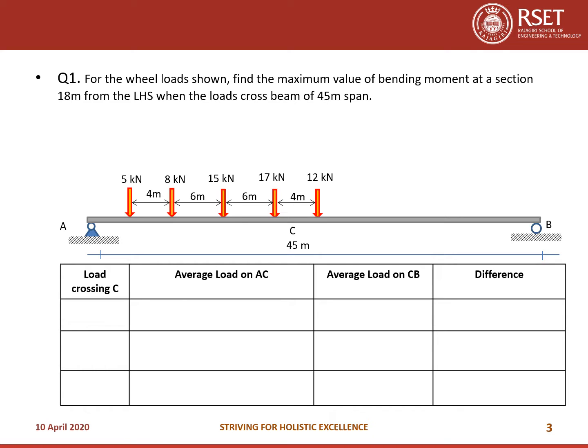Let us draw this table and see where the maximum bending moment will occur. First, consider the load 12 kN crossing C — that is, to the right side of C is only 12 kN, and the rest of the loads are to the left of C. The average load on segment AC: 17 plus 15 plus 8 plus 5 divided by the total length, which is 18 (since 5+5+4+4 = 18), giving 2.5.